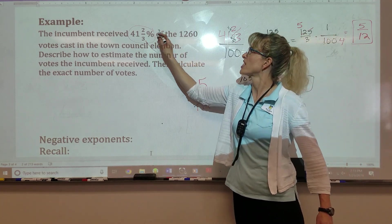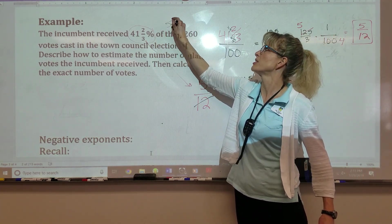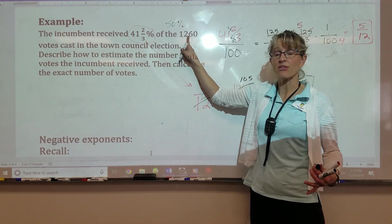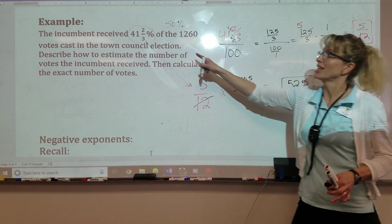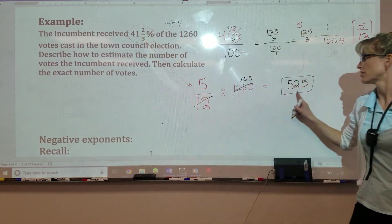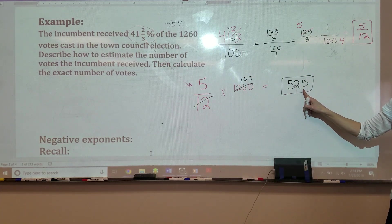Does it seem about right? 41% of 1260. Well, if I did 50% of 1260, that's half. That'd be about 630. And I'm a little bit less than 50%. So I'm a little bit less than 630, so that makes sense.